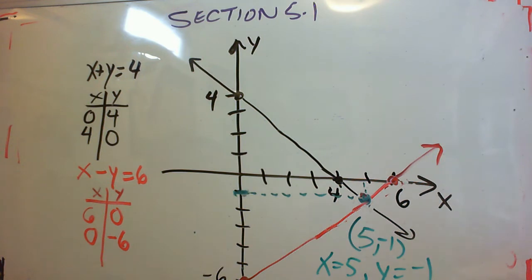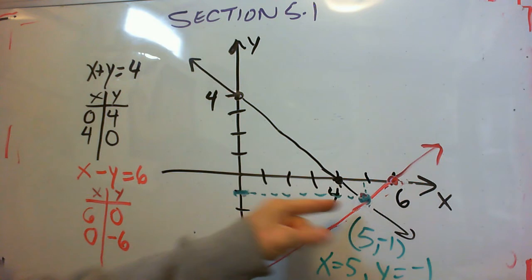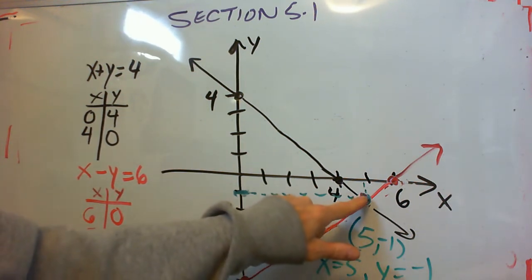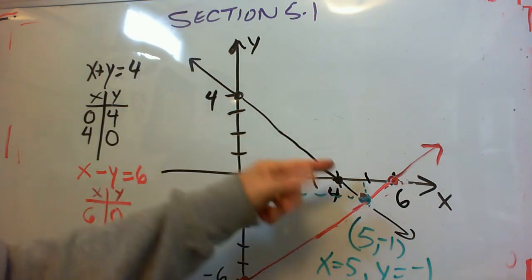And you can see the drawback of this method is that if your point of intersection didn't happen to be in nice whole numbers, it would be kind of hard to tell exactly where they're intersecting. But it is a nice method to demonstrate how we get solutions of linear systems. That shared point has to be on both lines.